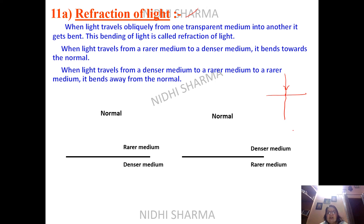This refraction is possible because of the speed of light in different media. That is the reason behind it. So let us see what happens when light comes from the first diagram we are talking about.